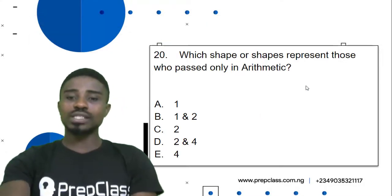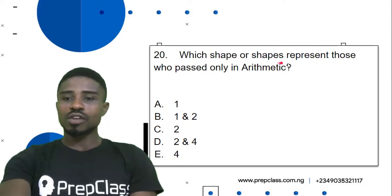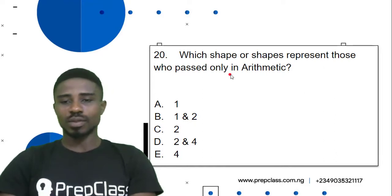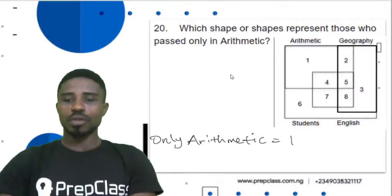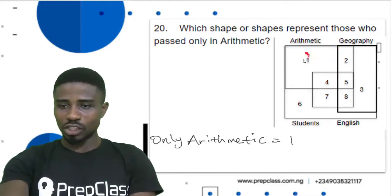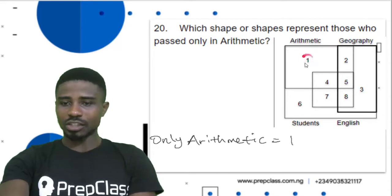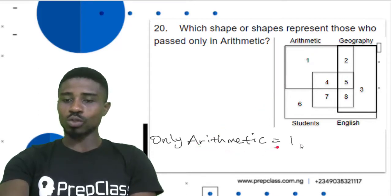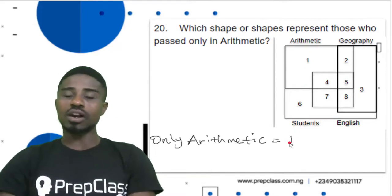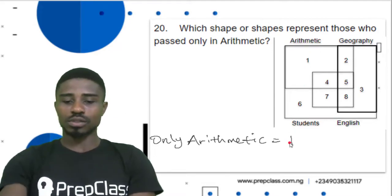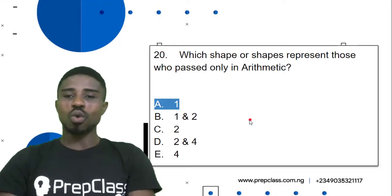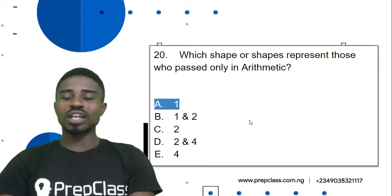Question 20: Which shape or shapes represents those who passed only in arithmetic? Looking at the diagram, the shape for only arithmetic is region 1. Only arithmetic equals 1. So 1 is our correct answer. Question 20, option A — 1 is our correct answer.